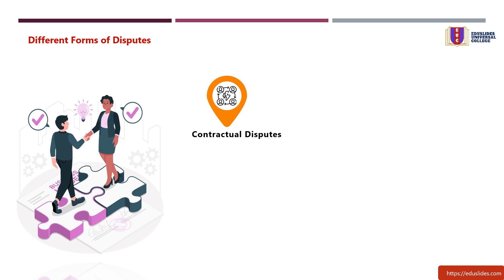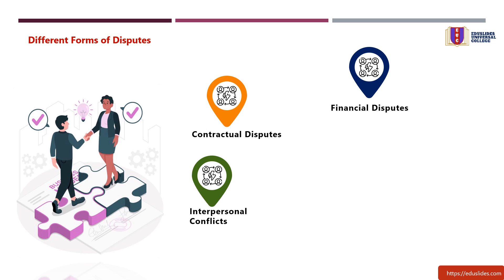One: contractual disputes — conflicts arising from breaches or disagreements related to contracts, agreements, or terms and conditions. Two: financial disputes — conflicts over financial matters such as payments, pricing, billing errors, or financial obligations. Three: interpersonal conflicts — disagreements or tensions between individuals within an organization, which can affect team dynamics and productivity.